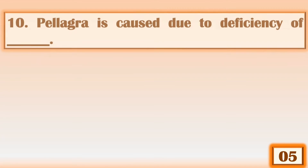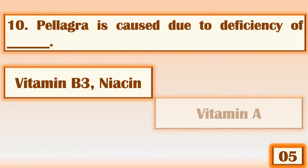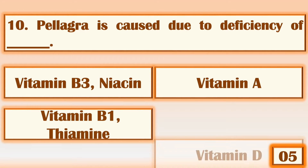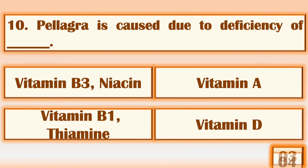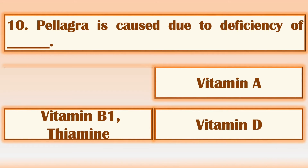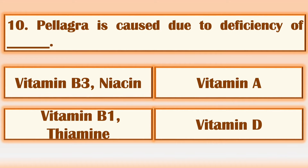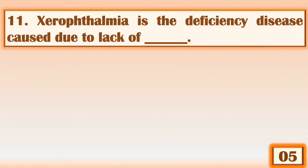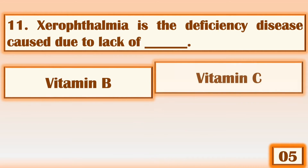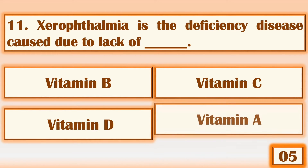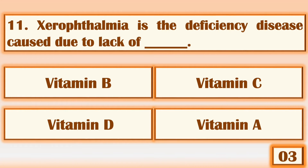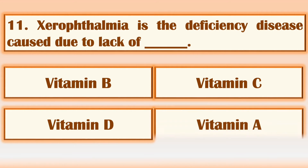Pellagra is caused due to deficiency of vitamin B3. Xerophthalmia is the deficiency disease caused due to lack of vitamin A.